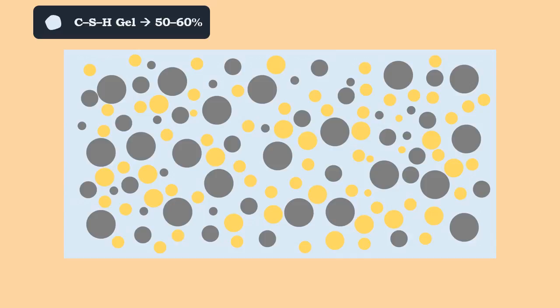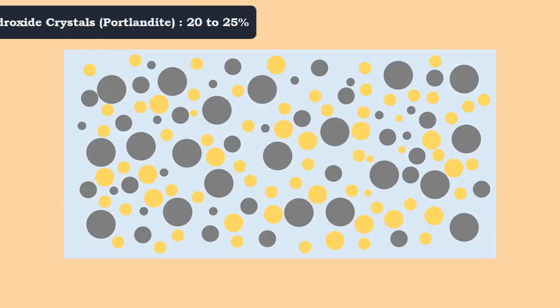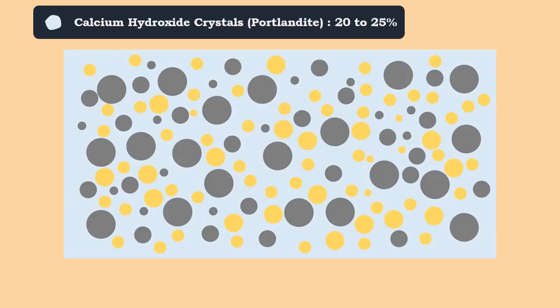The calcium hydroxide crystals, also known as portlandite, consist of 20 to 25 percent of the volume of solids.